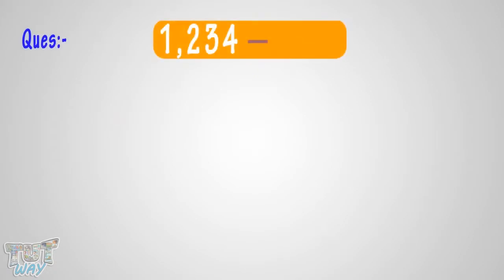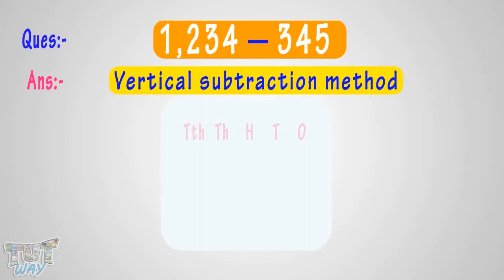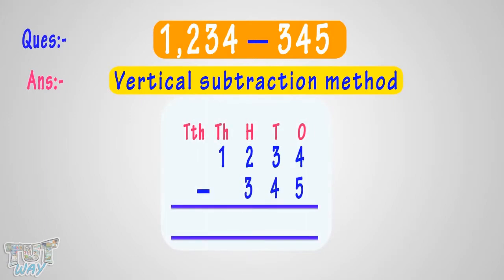We have to subtract 345 from 1,234. So let's do it using the vertical subtraction method. Always write the bigger number first, then the smaller number. Also, each digit must be below its right place. Now we cannot subtract 5 from 4.